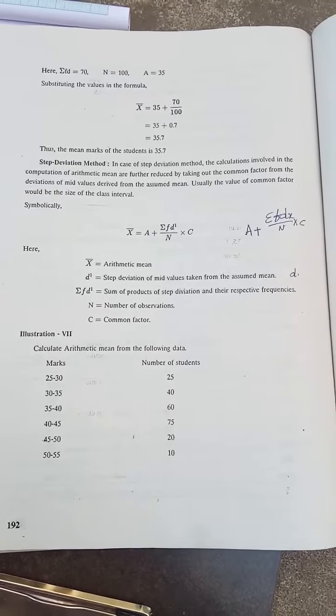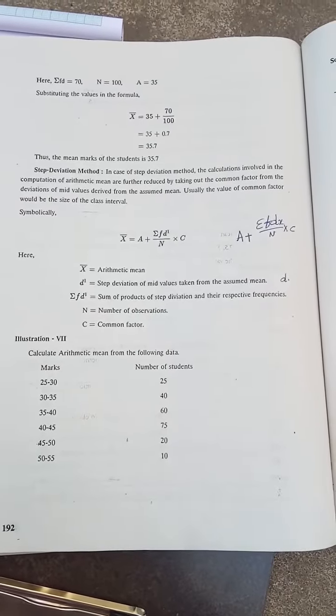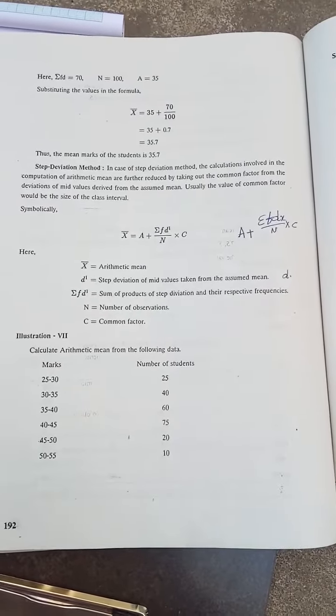Under this, the formula is x̄ = a + (Σfdx/n)×c. Somebody will write it as a + (Σfd'/n)×c. Okay, no problem. We call it as fdx, no problem.